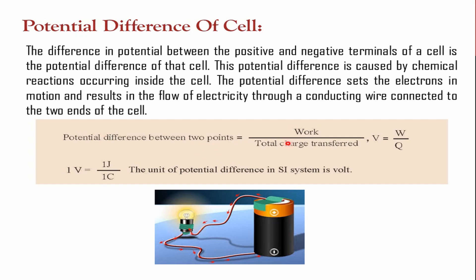The potential difference between two points is given by V = W/Q, where W is the work done to move a charge from higher potential to lower potential, and Q is the total charge transferred. For example, one volt equals one joule per one coulomb. The SI unit of potential difference is the volt. The potential difference of a cell is the difference in potential between the positive and negative terminals of the cell.